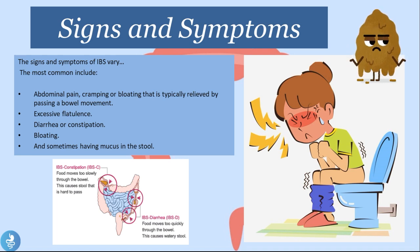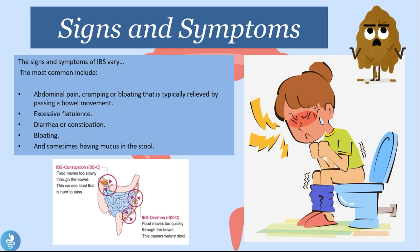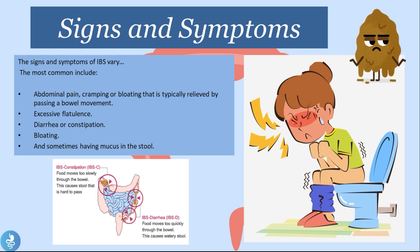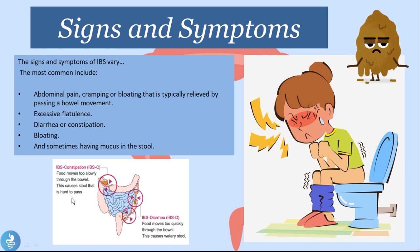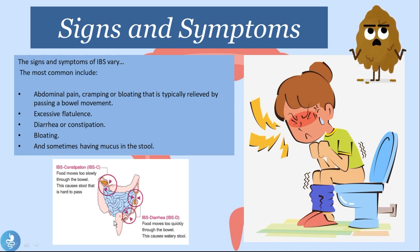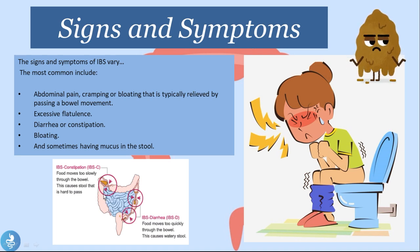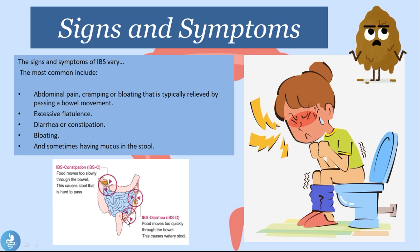You'll notice the signs and symptoms include diarrhea or constipation — some patients will experience diarrhea, others constipation, and some a mix of both. In constipation-predominant IBS, food moves too slowly through the bowel. Usually, digested food enters the large intestine and is propelled upward via the ascending colon, across the transverse colon, down the descending colon into the sigmoid colon, the rectum, and out through the anus.